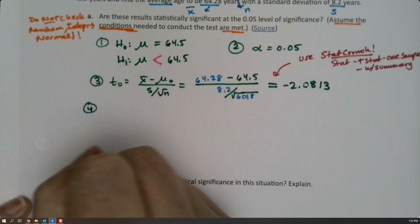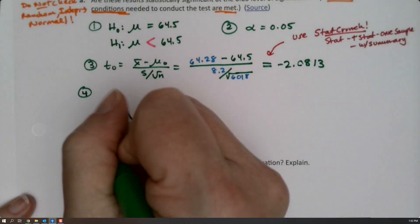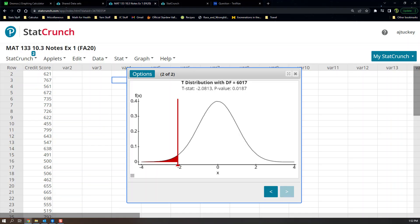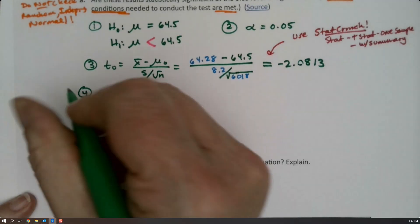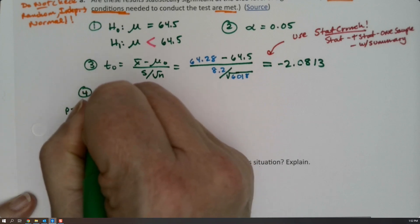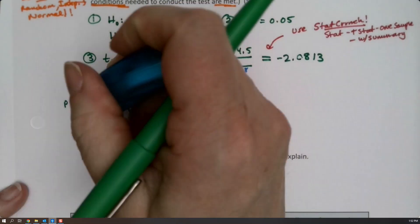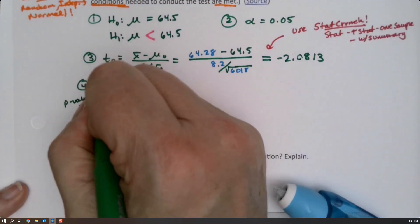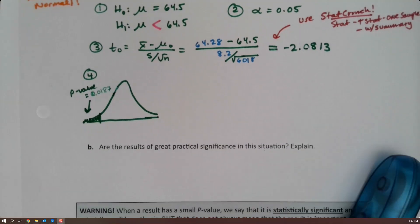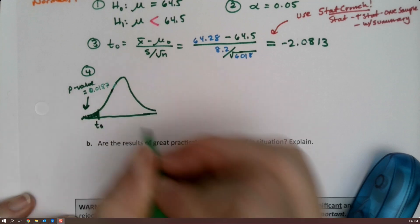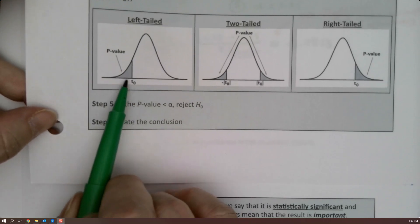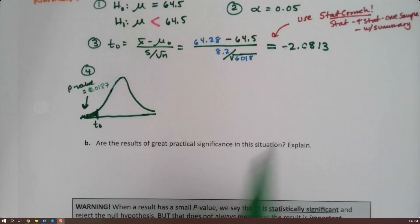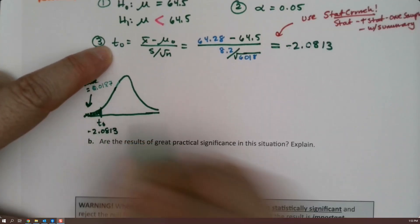Now for step four, I'm going to draw a t-curve over here. I know it looks like a normal curve, but it's not, it's a t-curve. Then I'm going to label it just like they did in StatCrunch. I'm going to have my shaded tail, and I'm going to put the p-value where it belongs, which is this area right here. So p-value is 0.0187. And down here, we put our t0 label, which is negative 2.0813.